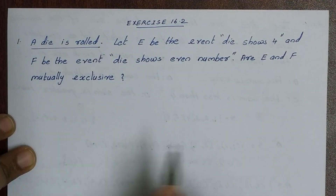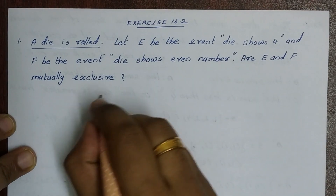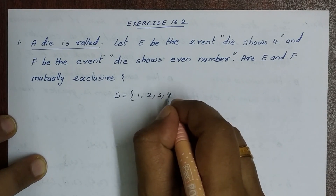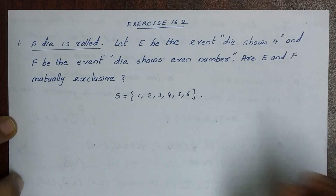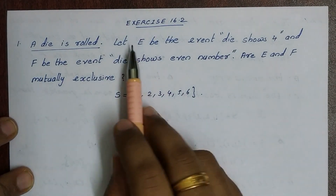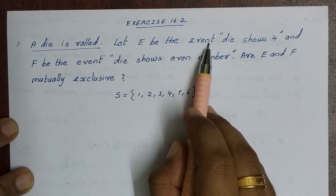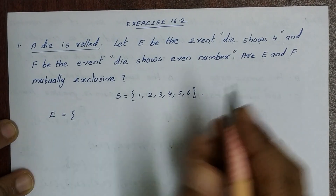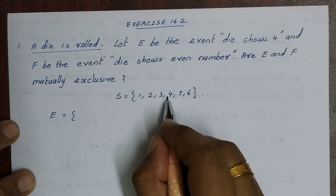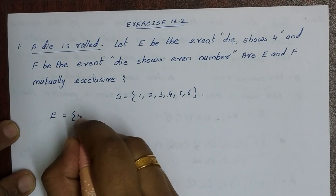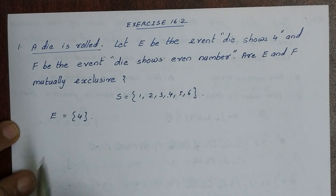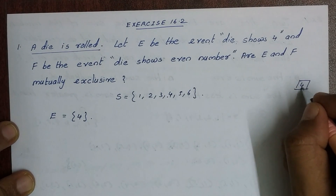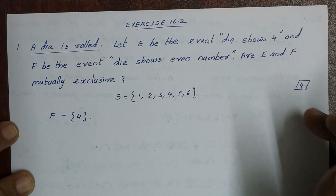A die is rolled. We have a sample space: {1, 2, 3, 4, 5, 6}. Let E be the event the die shows 4 — so E = {4}, since the outcome we have is the face showing 4.